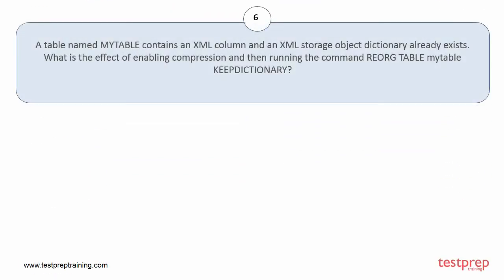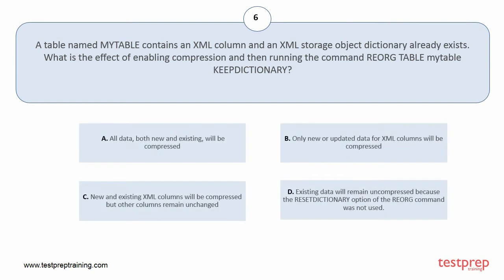Question number 6. A table named mytable contains an XML column, and an XML storage object dictionary already exists. What is the effect of enabling compression and then running the command reorg table mytable keep dictionary? Your options are: A. All data, both new and existing, will be compressed. B. Only new or updated data for XML columns will be compressed. C. New and existing XML columns will be compressed, but other columns remain unchanged. D. Existing data will remain uncompressed because the reset dictionary option of the reorg command was not used. The correct answer is option D.